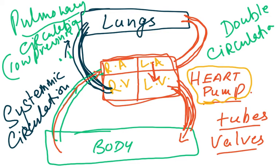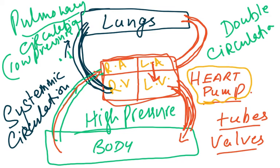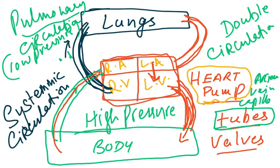The circulation supplying blood to the body is a very high-pressure circulation, because the body cells have to receive blood. As blood moves away from the heart it becomes slower and slower, and has to be taken back by a system of tubes. That system of tubes is the arteries, veins and capillaries, which we'll talk about in great detail shortly.